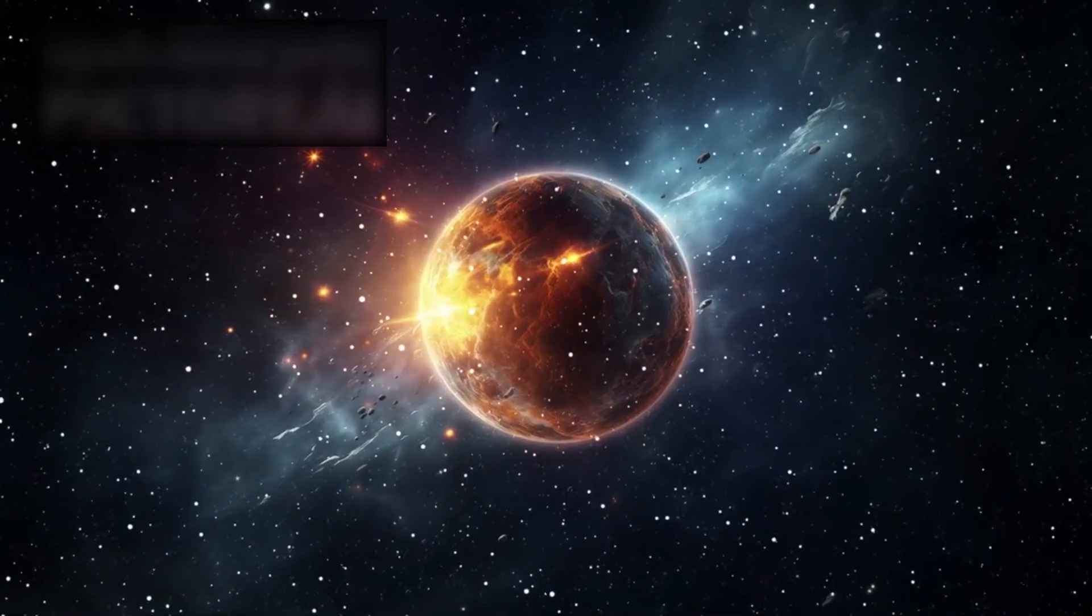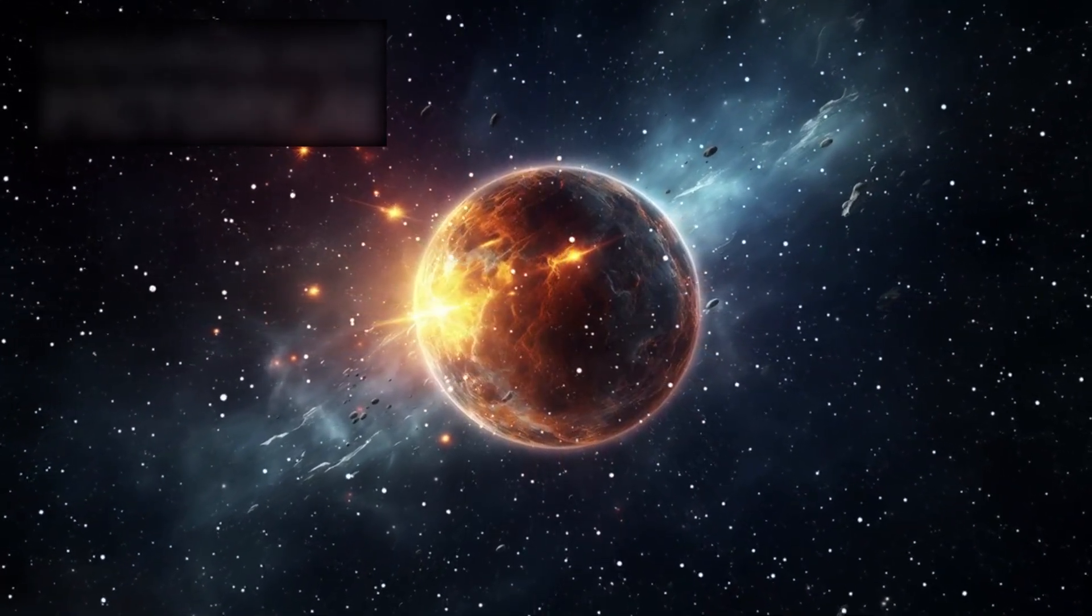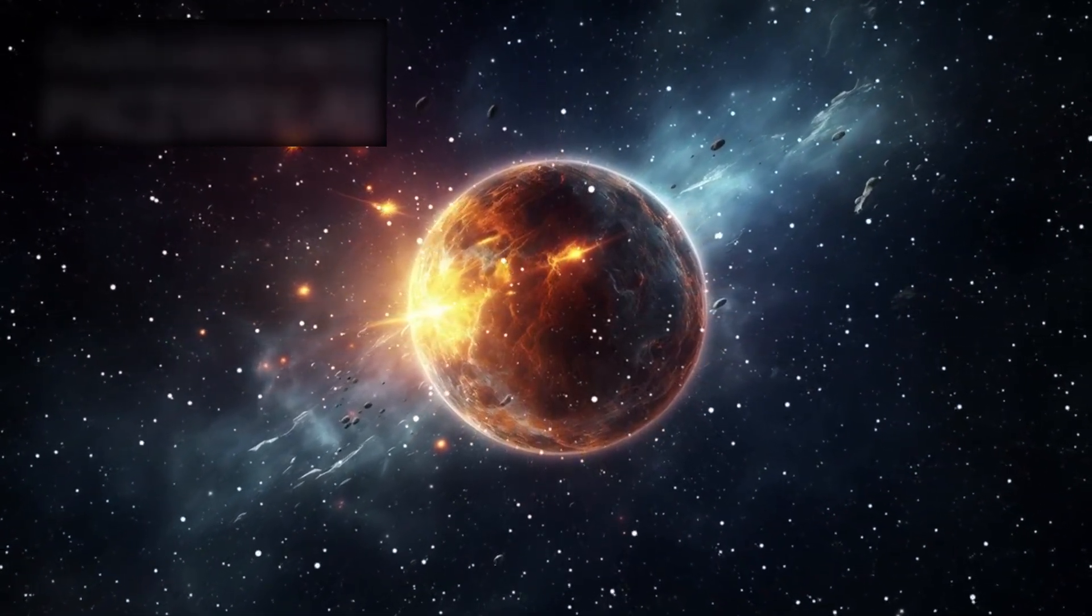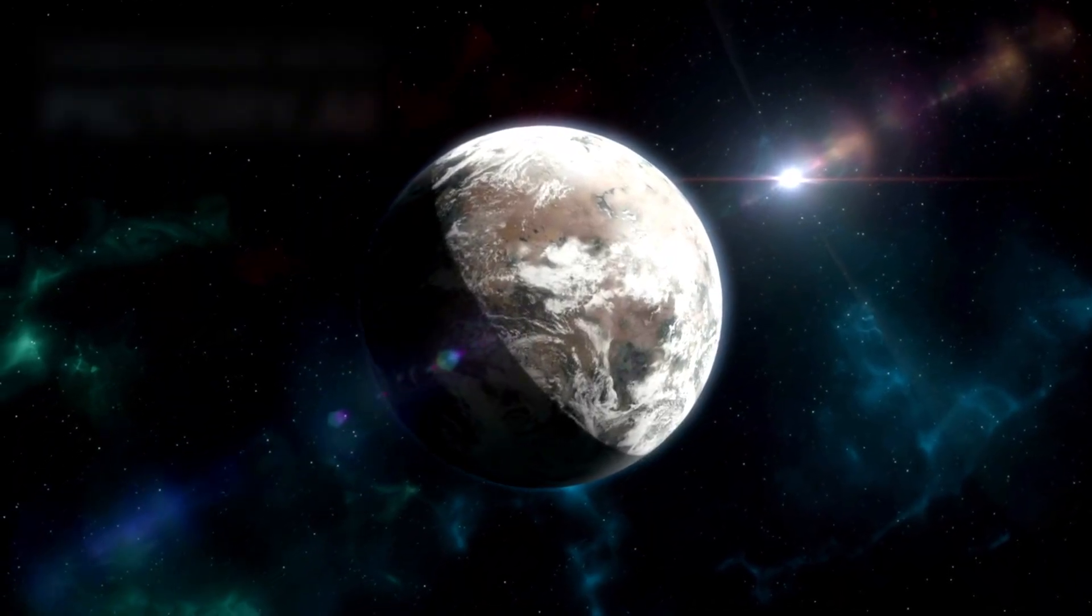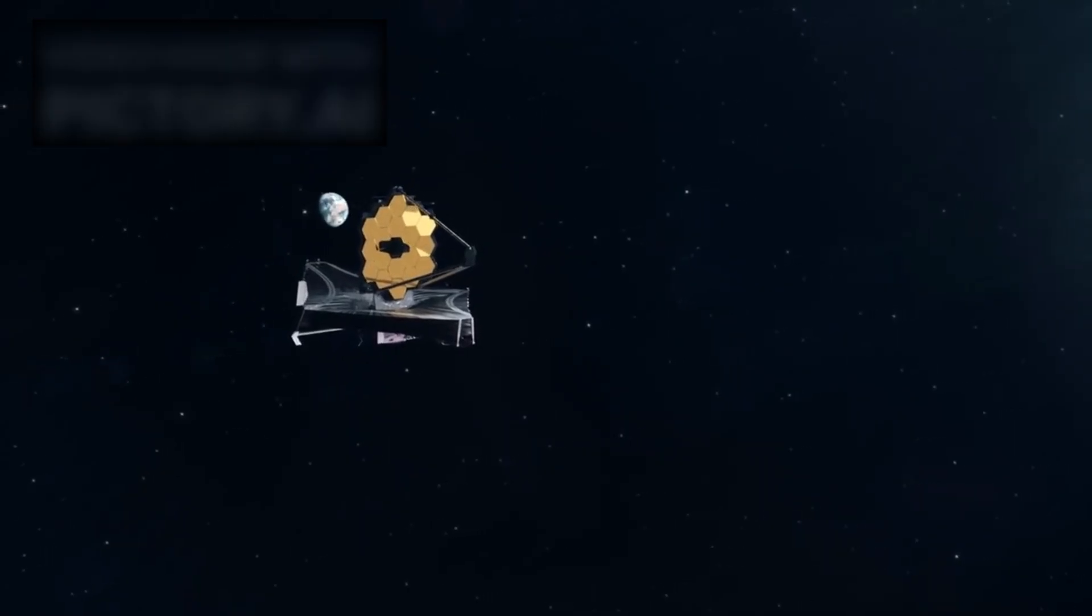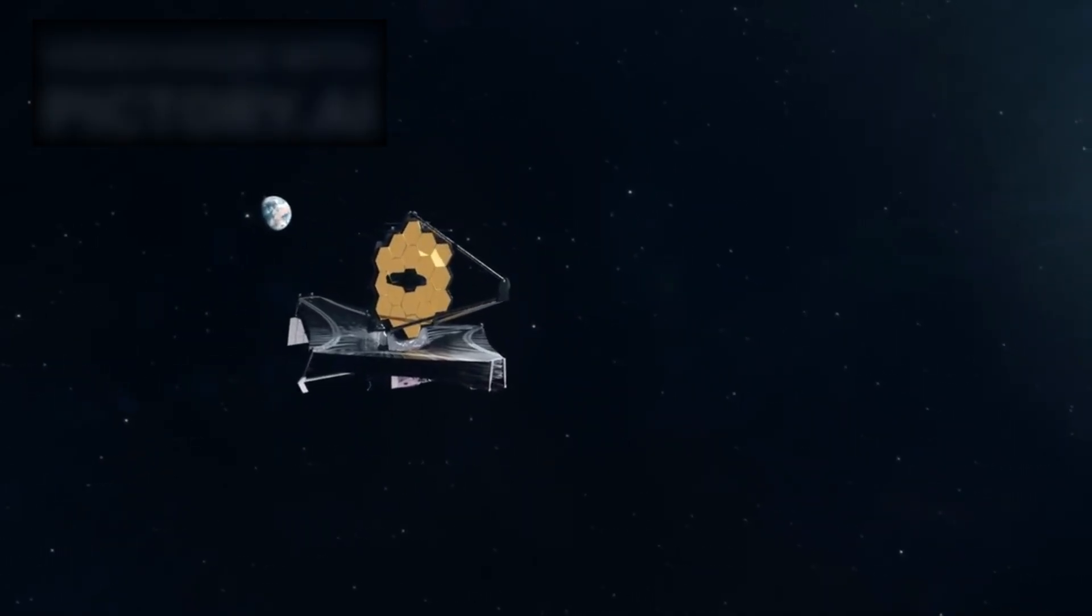Proxima b orbits Proxima Centauri, a small red dwarf star located just 4.2 light-years away. This makes it the nearest known exoplanet to Earth. The new image released by Webb has ignited speculation about its potential Earth-like qualities.